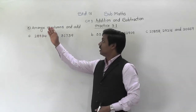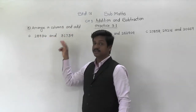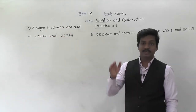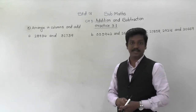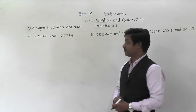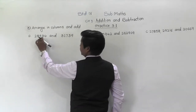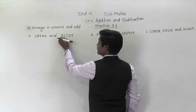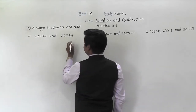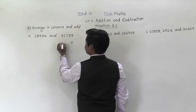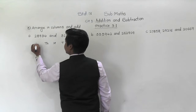See what is question number 3 — arrange in columns and add. Numbers are given; we have to arrange them into the columns according to the places and then add them, as we have seen in yesterday's lecture. Two numbers are there: 28,934 and 31,739. First of all we will write the name of the places: ones, tens, hundreds, thousands, and ten-thousands.